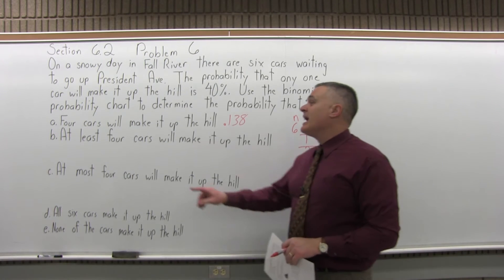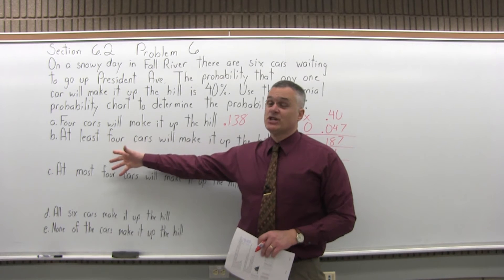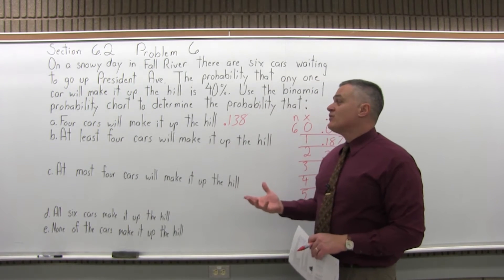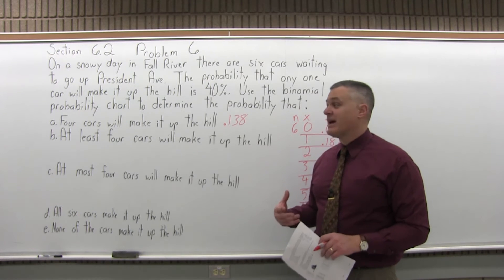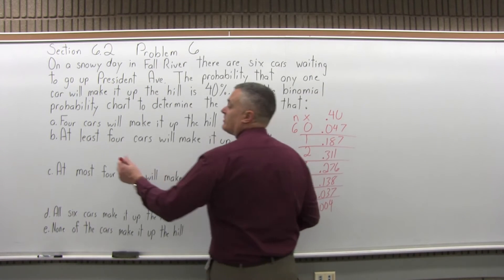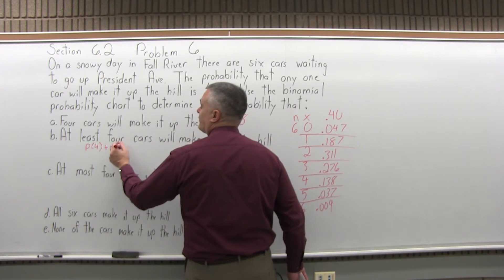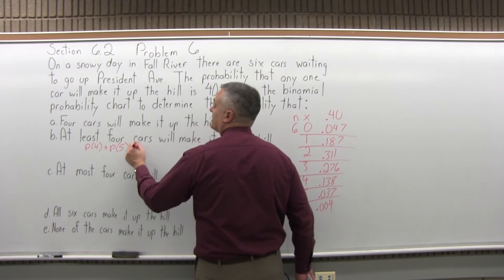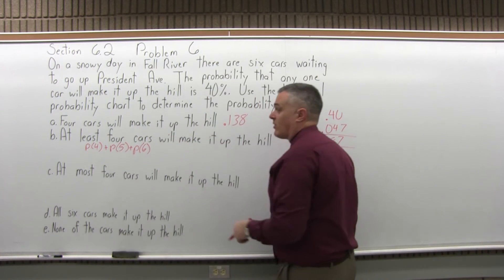B says at least four cars make it up the hill. That at least changes the process. At least four means four is the least. It's four, five, or six, and you have to add the values for those probabilities together. We're going to do the probability for four plus the probability for five plus the probability for six. At least four. Four is the least. It's four or more.